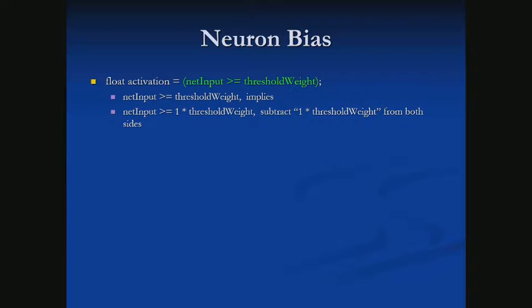Next, we're going to subtract from both sides that one times threshold weight. So now we have: net input minus one times threshold weight is greater than or equal to zero.